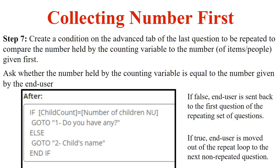Step seven is where you create the logic that tests if the end user has gone through the loop as many times as they said they needed to. On that same last question from step six, but down in the logic section, you script a condition that tests if the counting variable equals the number of children. If it does, move the end user out of the loop and into the next question. Otherwise — else — go to 2-Child's Name, which puts them back in the loop. This condition runs every time the end user hits the child's birthday question and reevaluates how many times the loop has been completed.